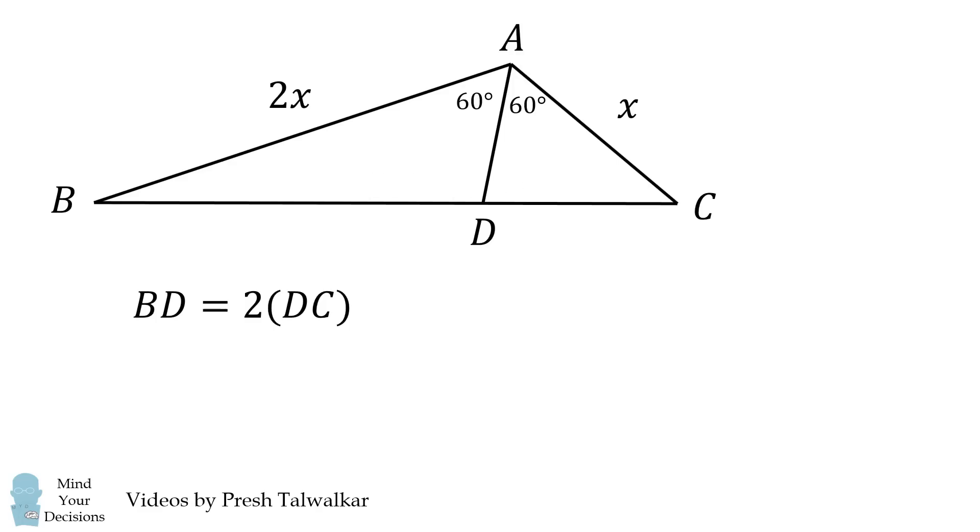So if DC has a length of y, BD will have a length of 2y. Now recall that the length of AD is 100.